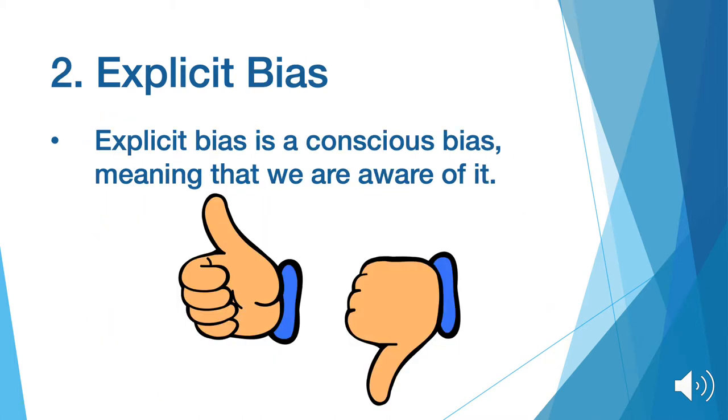The next type of bias is explicit bias. Explicit bias is a conscious bias, meaning we are aware of it.